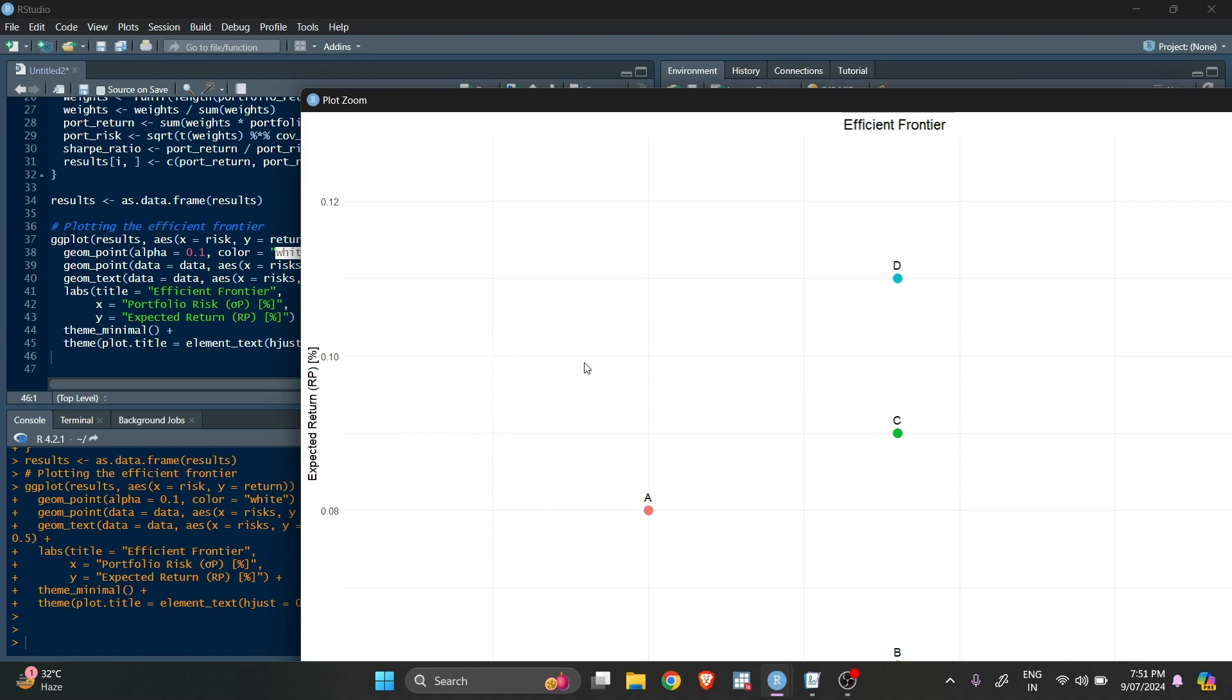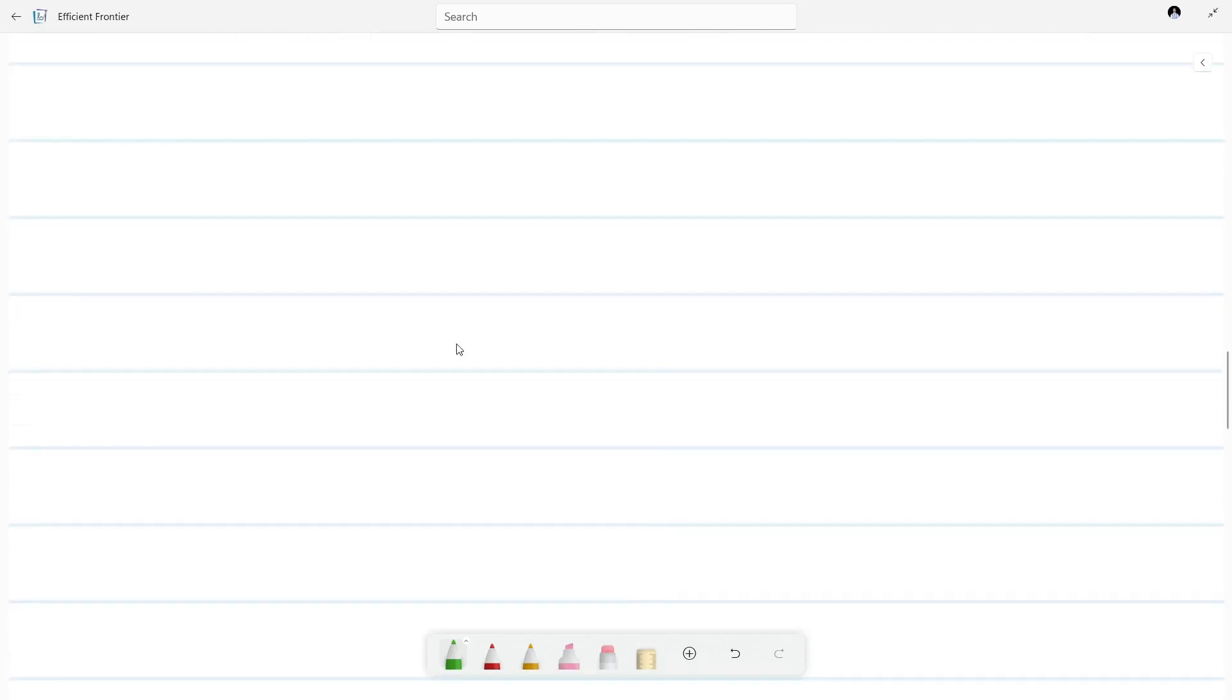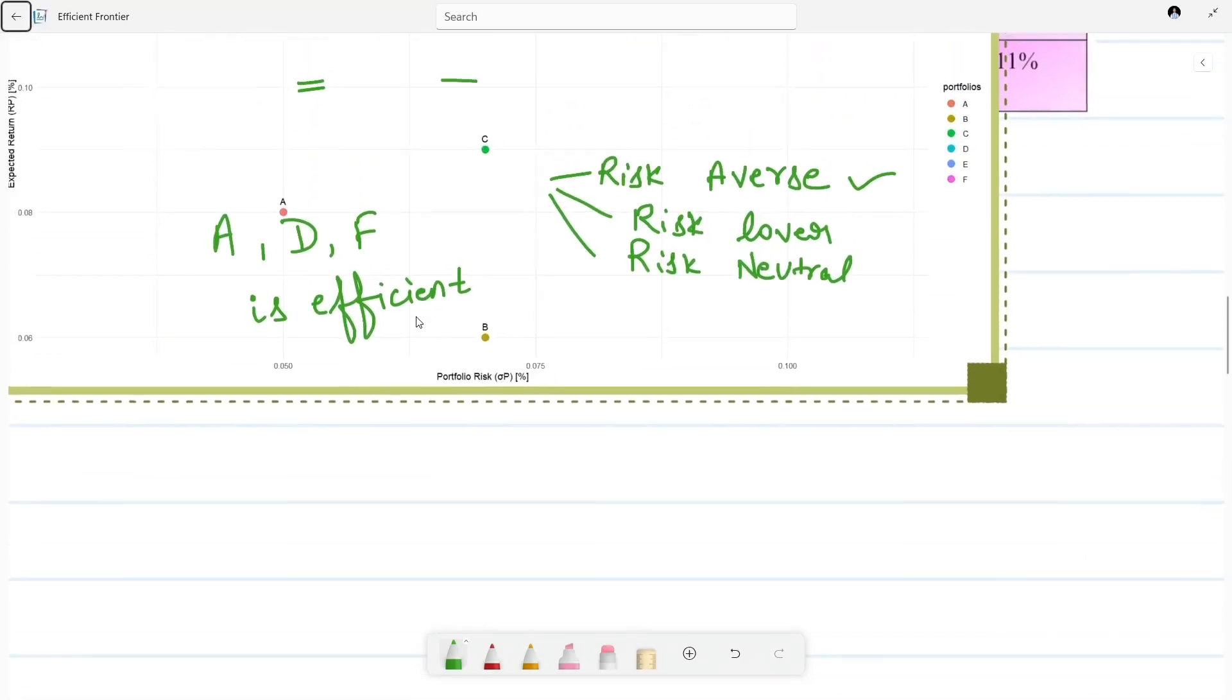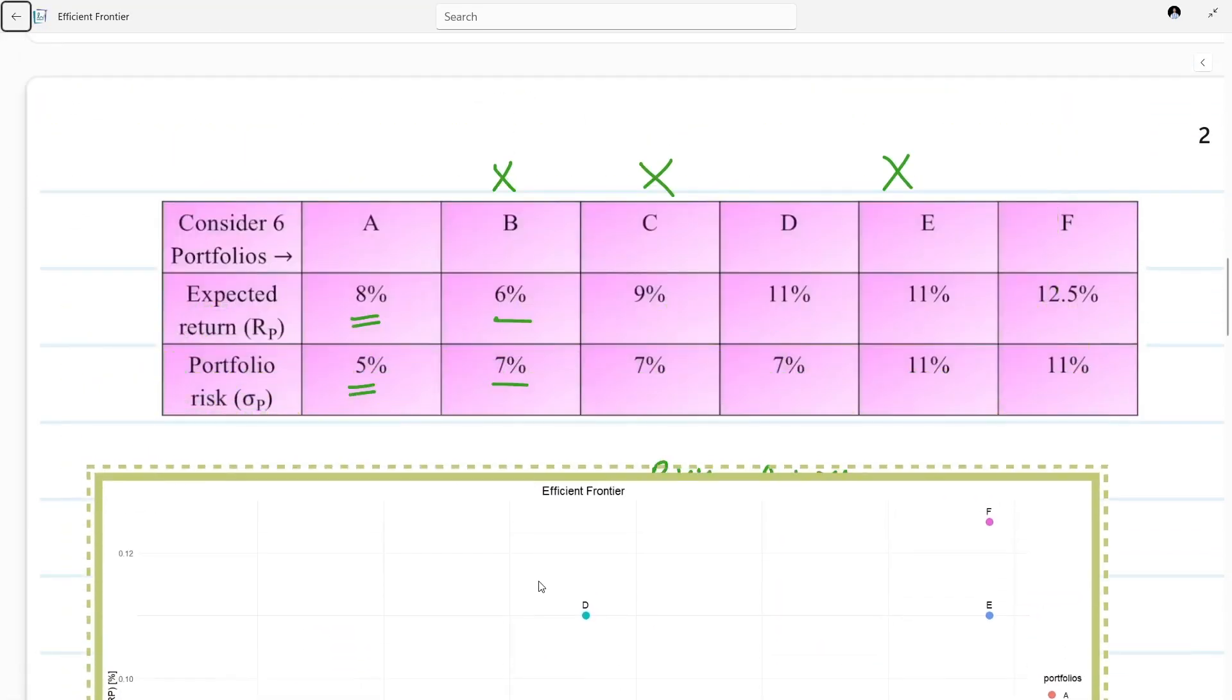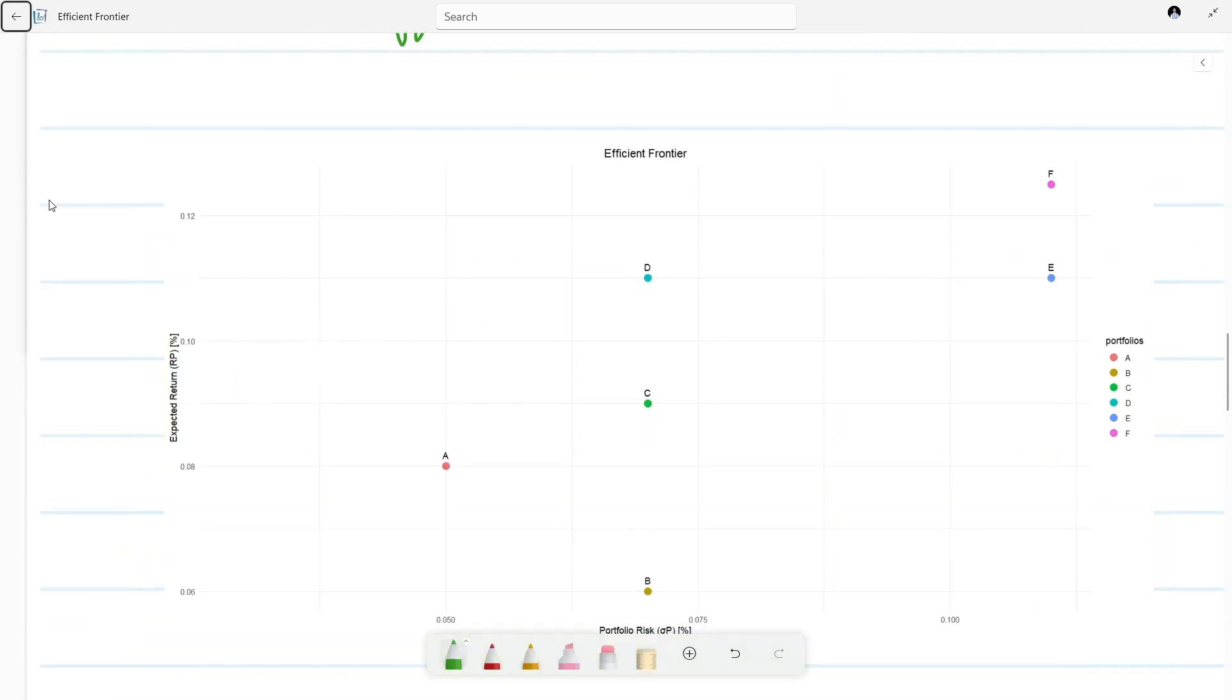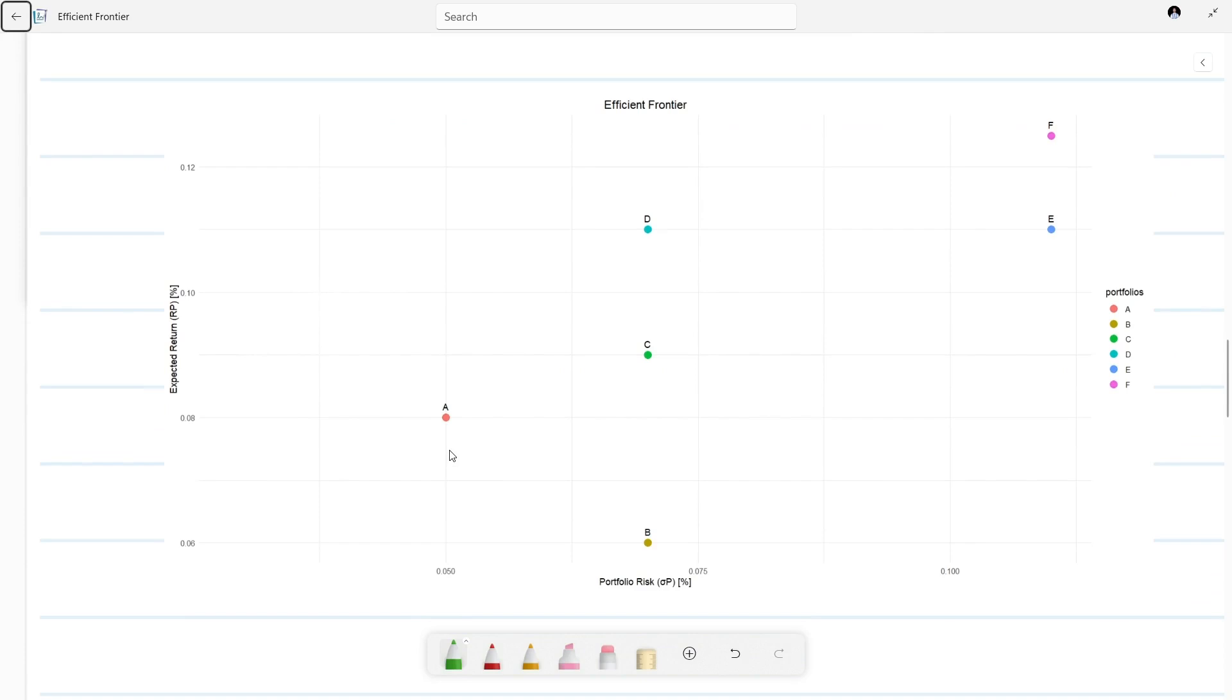Let me just copy it and paste. So the efficient frontier looks like this. I will show you through Excel, things will be much more clear. On the X axis we have risk, and on the Y axis we have return.